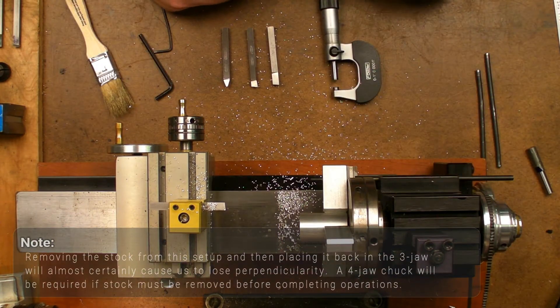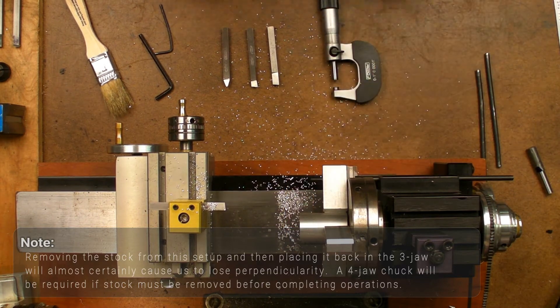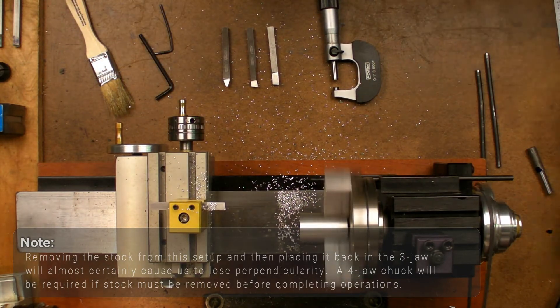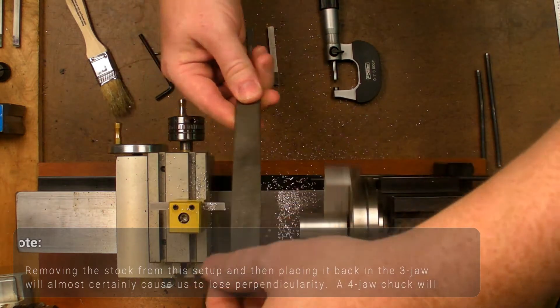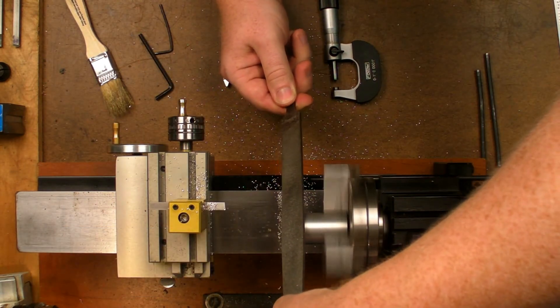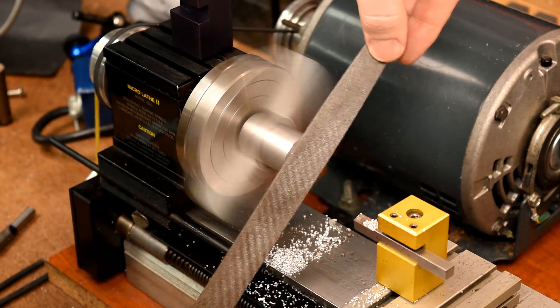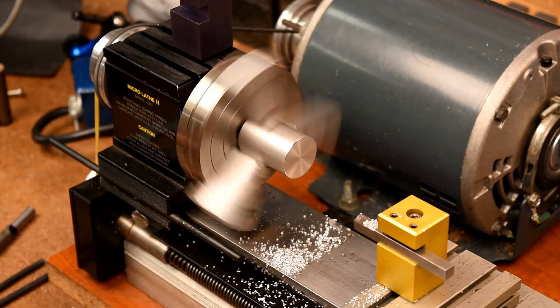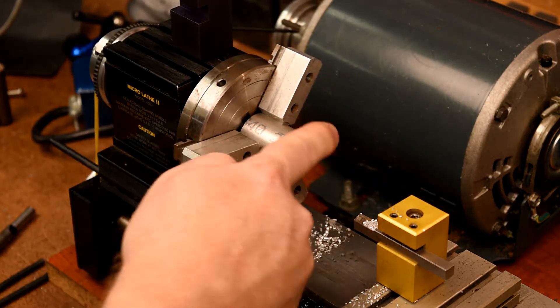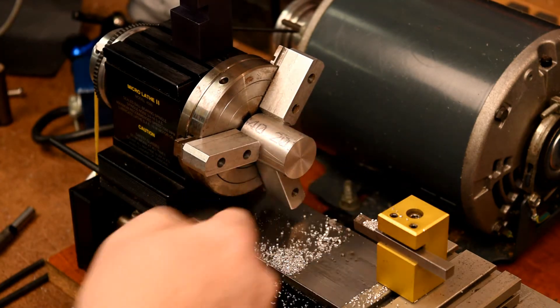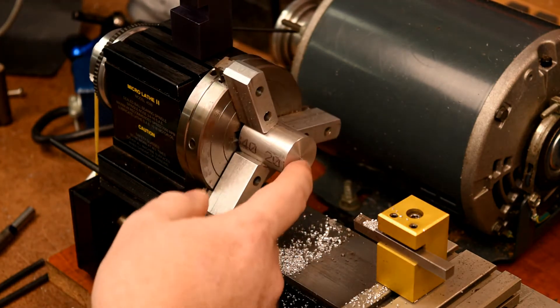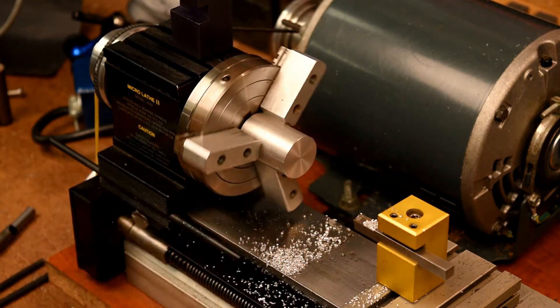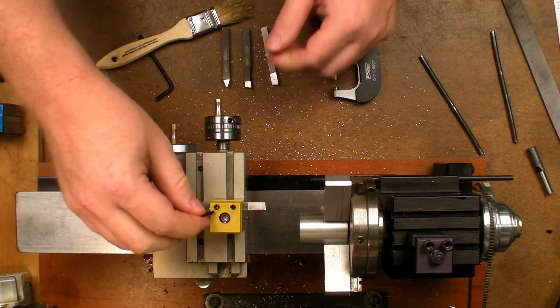So next I'm going to break those sharp edges just to show a quick way you can do that without having to change your tooling setup. Just take a file, carefully bring it in on the edge. And that's all there is to it. So we've removed enough here that it's not going to cut me or catch a bur. Aluminum is pretty soft and it's actually difficult to cut yourself with aluminum. But with steel, that's a real concern.